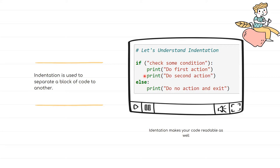If the condition is false or not matching, whatever is written inside the if block will not execute, and whatever is written in the else block is what gets executed. We also have something called a nested if statement. To recap: indentation is what separates one block from another — the if block is one block, and the else block is another block.